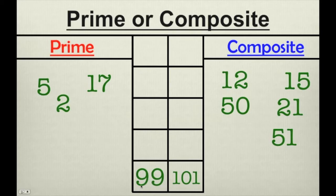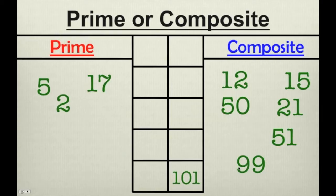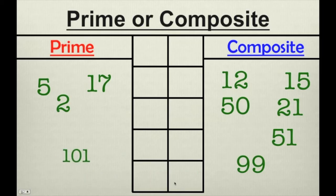How about 99? 99 is composite also. It can be divided by a whole bunch of numbers, including 1 and itself, as well as 9 and 11, and 3 and 33. And how about 101? 101 is prime. It can only be divided by 1 and itself.